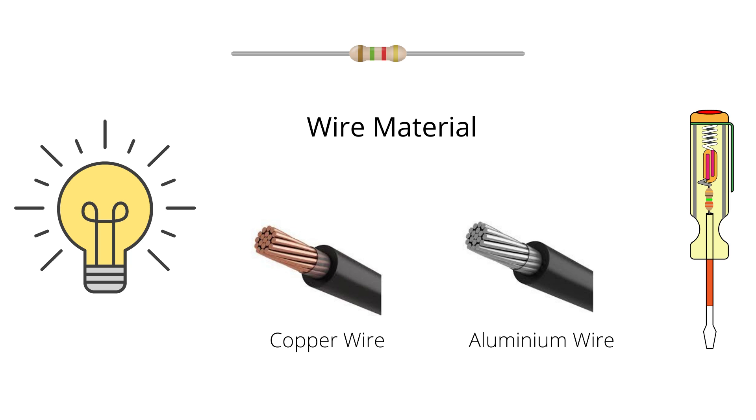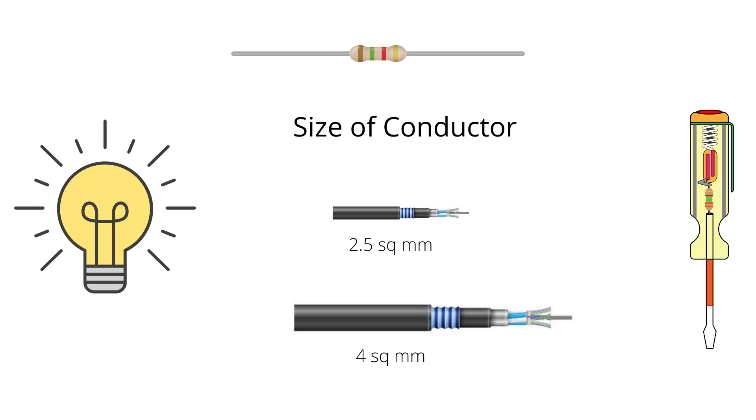Also, voltage drop changes if the size of the conductor changes. If we use a 2.5 square mm cable instead of a 4 square mm cable, then that would affect the voltage drop in the circuit.